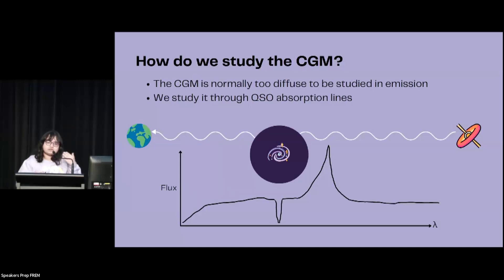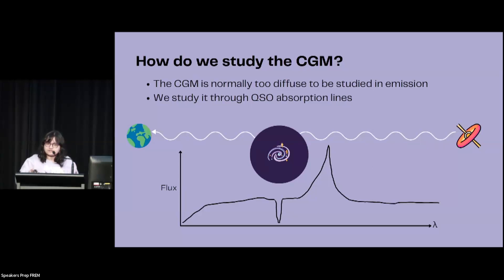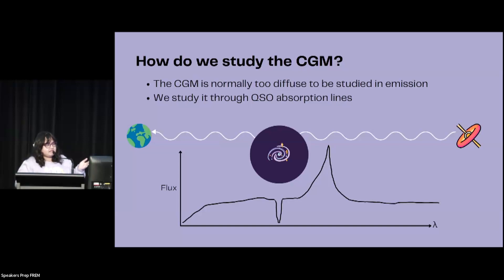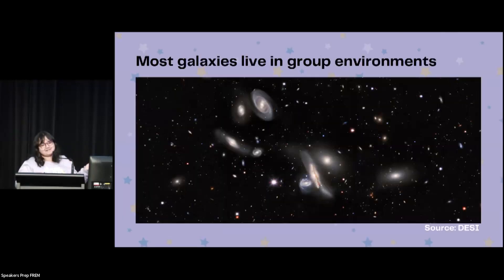This way we can study the circumgalactic medium — its properties, its kinematics, its metallicity, and that sort of stuff. That's another way that we can study the circumgalactic medium. Now I want to talk a little bit about the circumgalactic medium of galaxies that live in group environments.